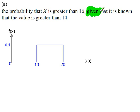Given that means there is a restriction on our graph here. We're only looking at the region where x is greater than 14, so we're restricting this graph to values of x greater than 14, and then we'll calculate this probability.